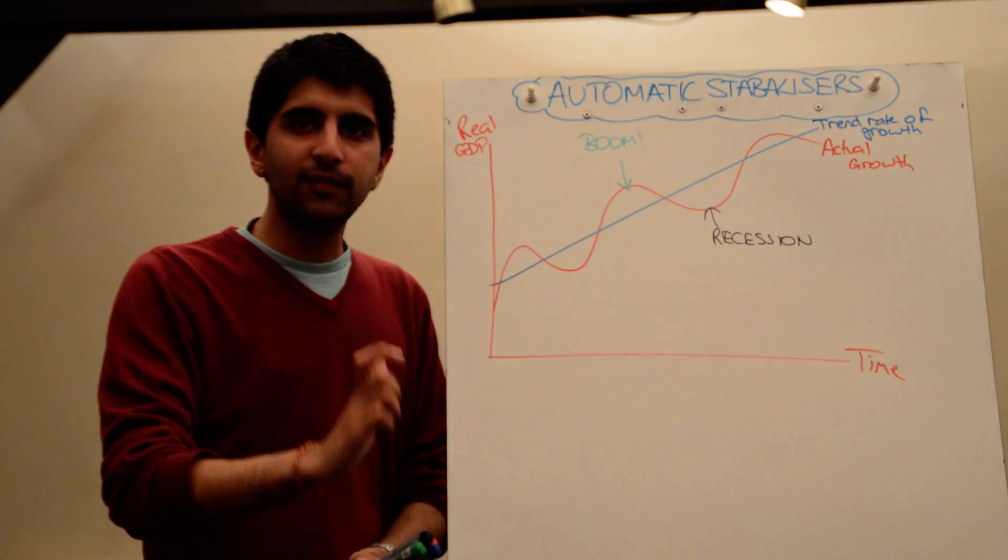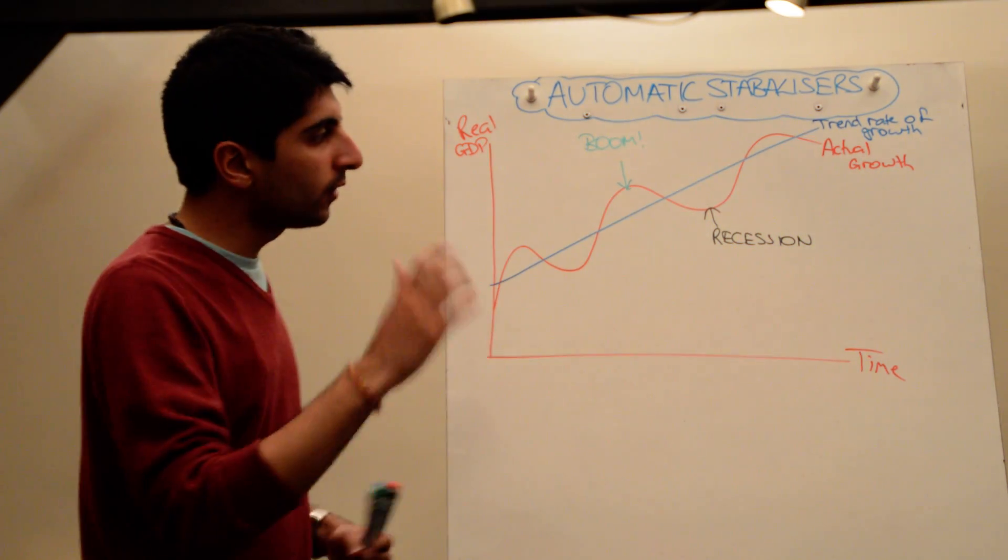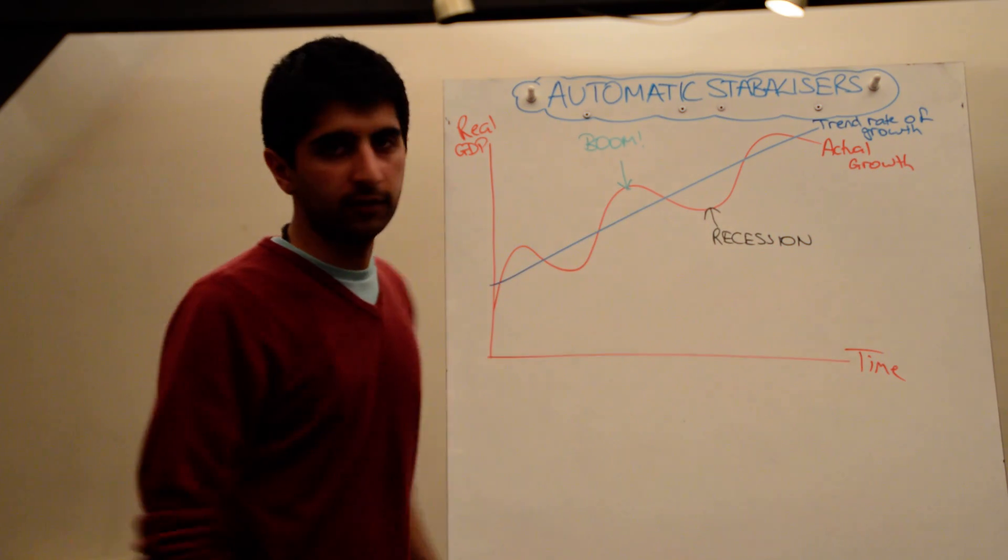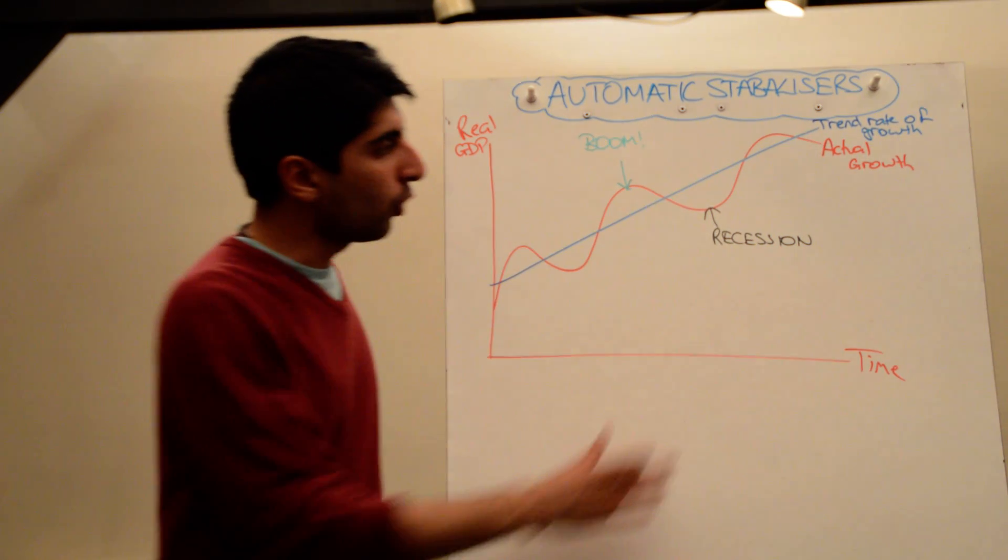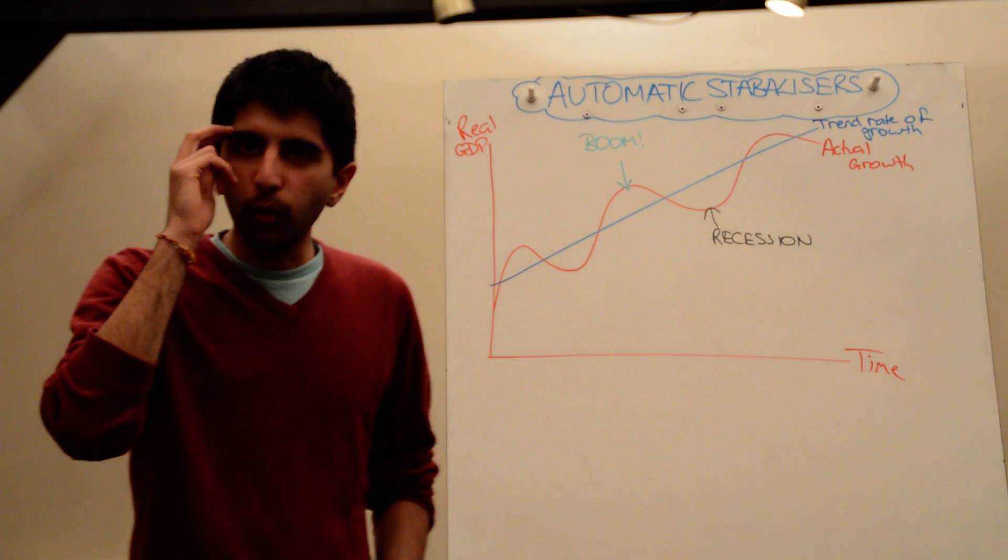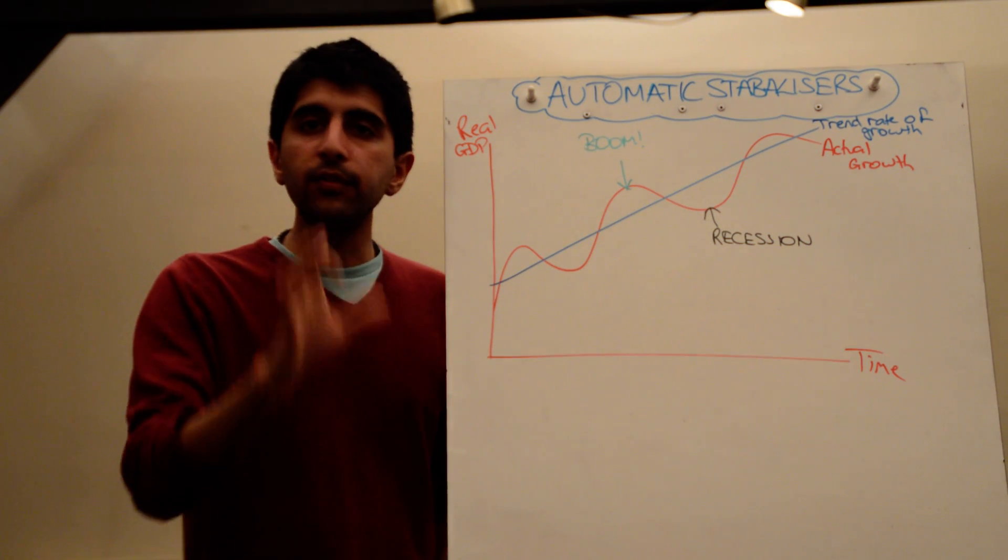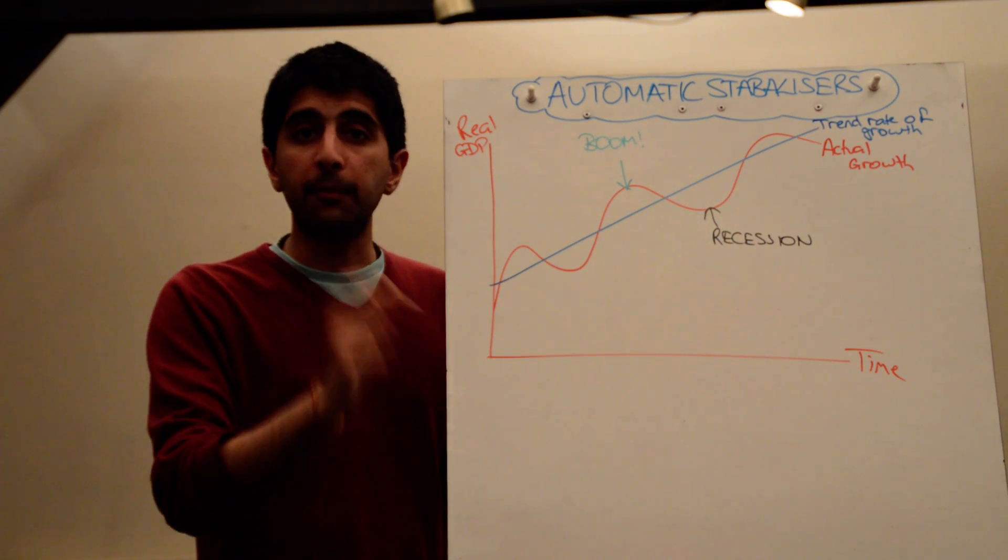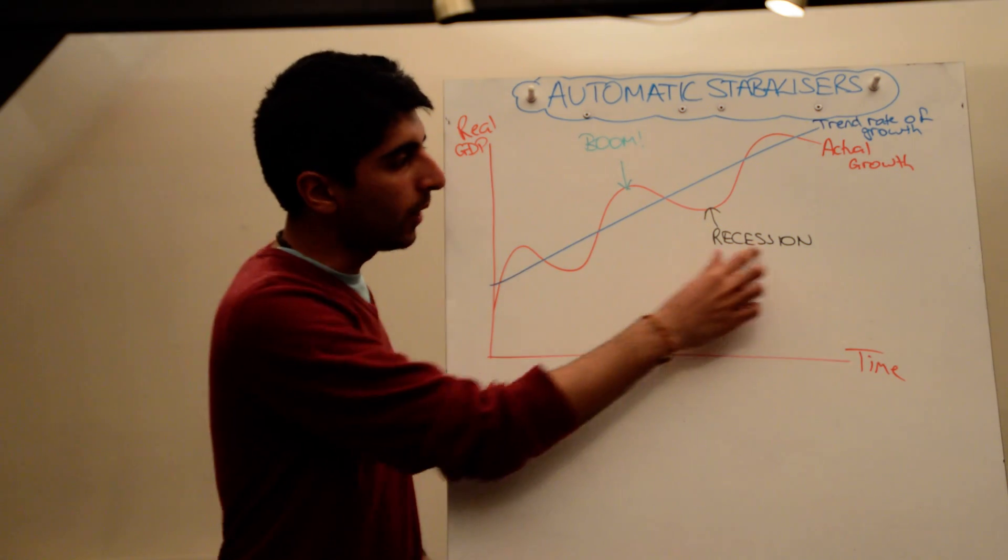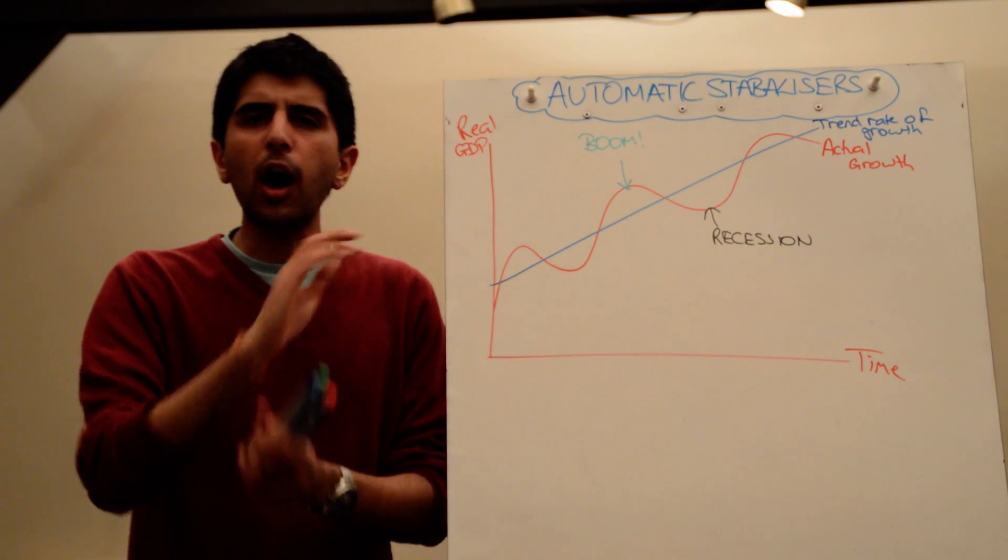Let's take a recession for example. In recession, if we focus on what's going on in the labor market, it gives us an idea of what's going on with government spending and taxation.